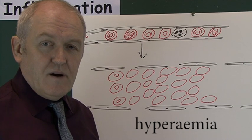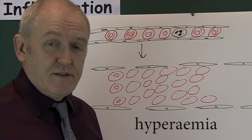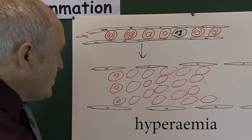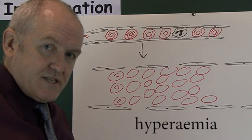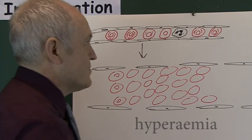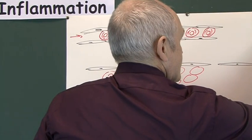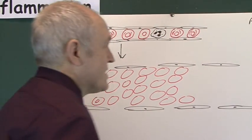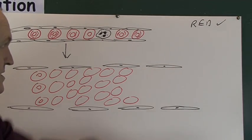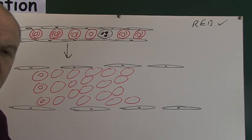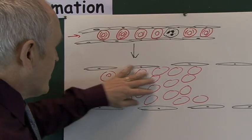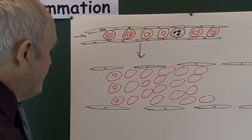The increased number of red cells passing through causes the redness. This is accounted for by the localized hyperemia — a localized hyperemia causing the redness of the inflammatory response.